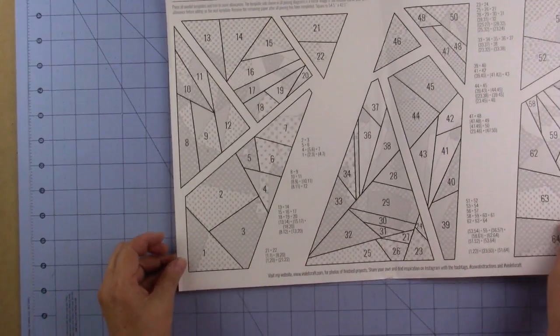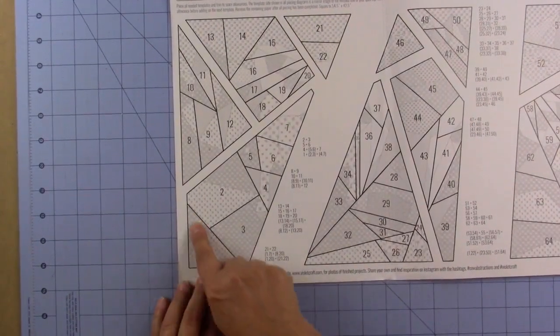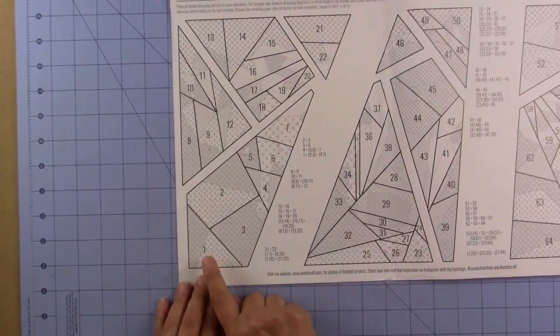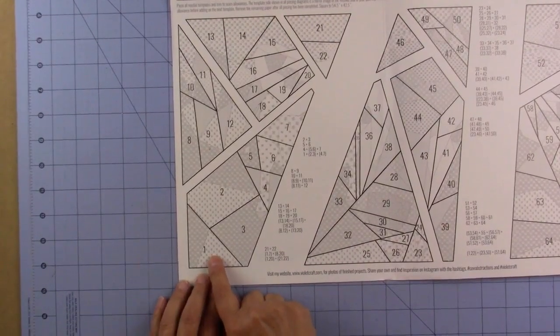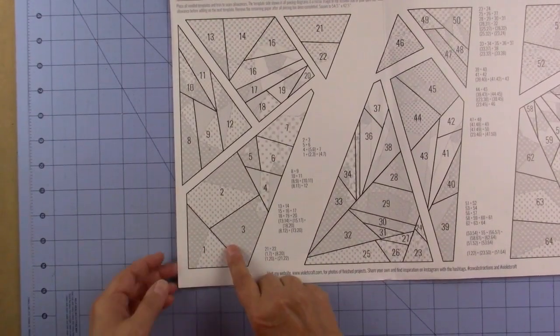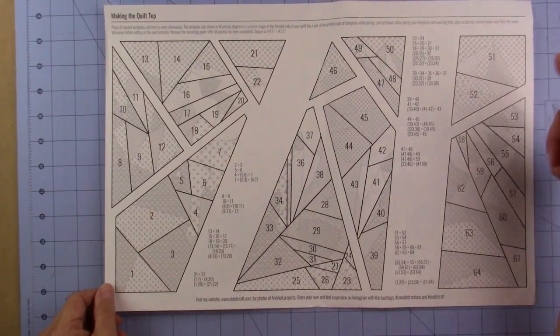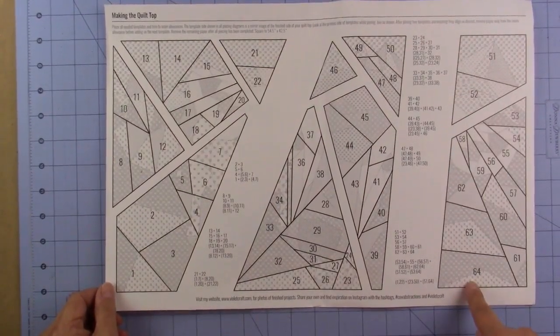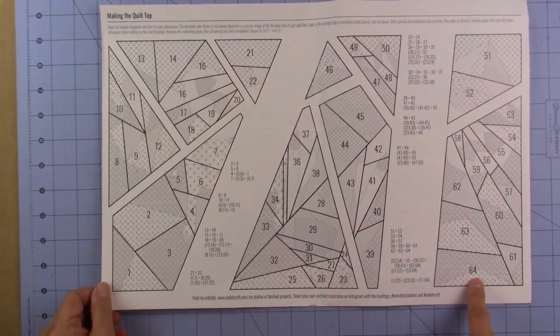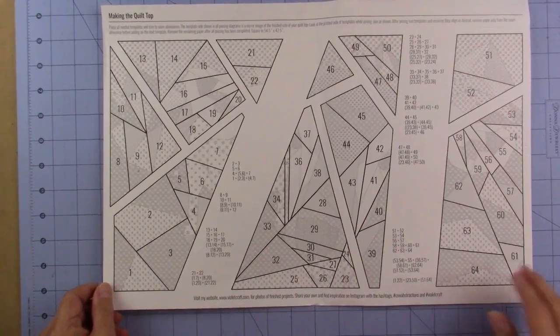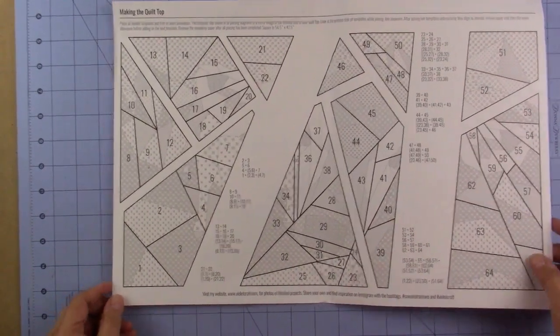We'll call this a unit. This is unit number one and the units go from number one on the left hand side to number 64 on the right hand side. It's best to do them in order so you don't get things confused.